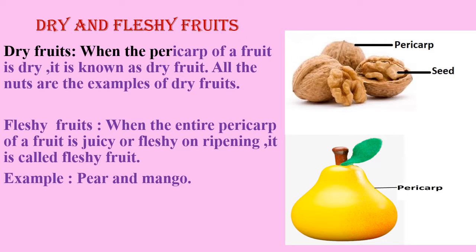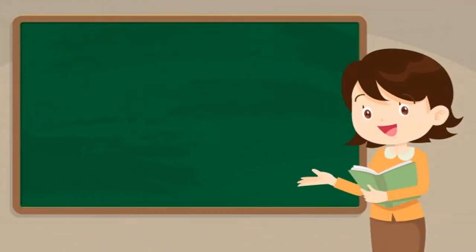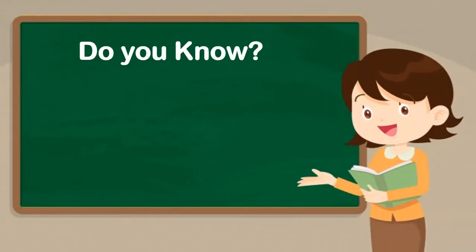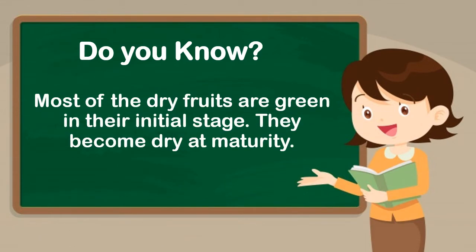Dry fruits: when the pericarp of a fruit is dry, it is known as a dry fruit. All nuts are examples of dry fruits. Fleshy fruits: when the entire pericarp of a fruit is juicy or fleshy at ripening, it is called a fleshy fruit. Examples are pear and mango. Most dry fruits are green in their initial stage but they become dry at maturity.